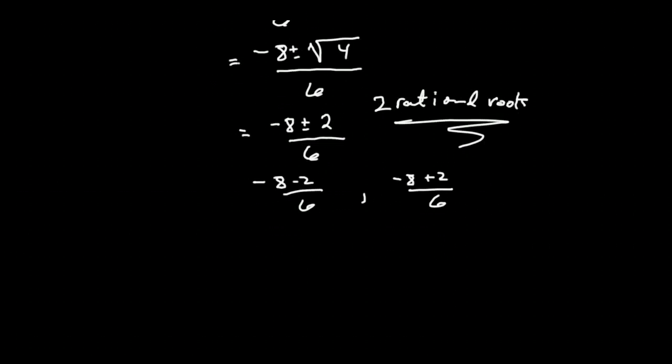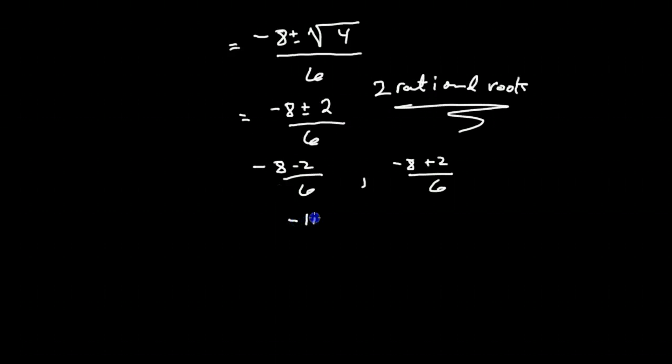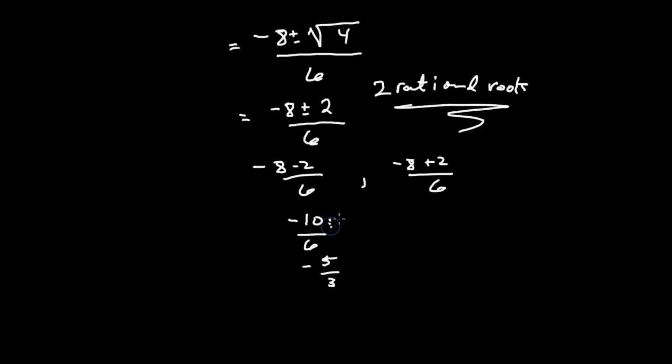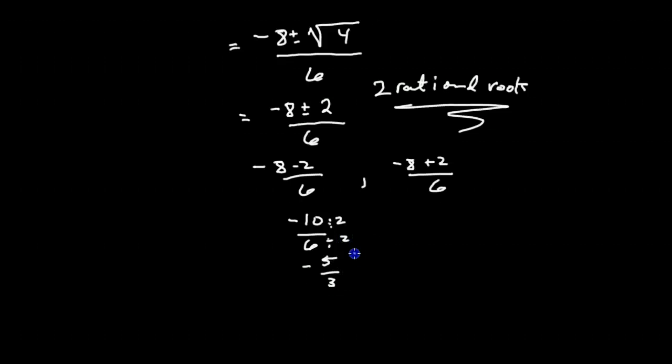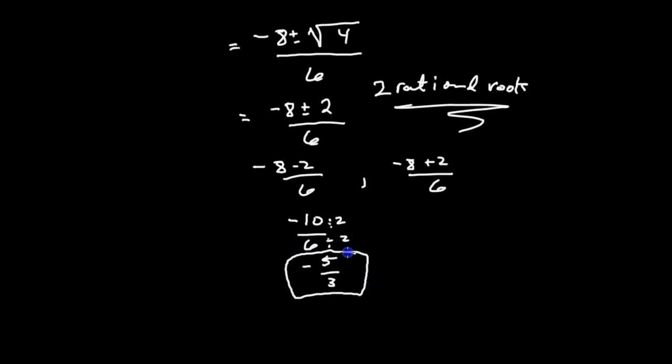So my first rational root will be negative 10 over 6, or negative 5 thirds. When I divide the numerator and the denominator by 2, I'll get negative 5 thirds.